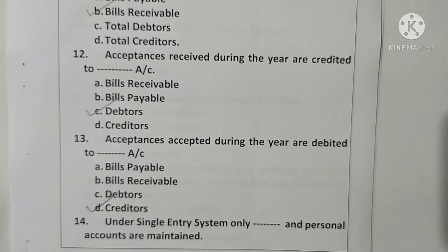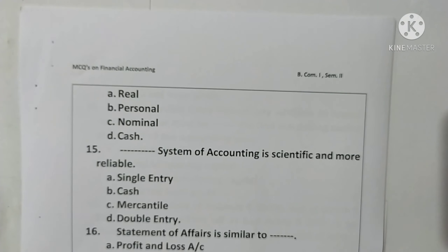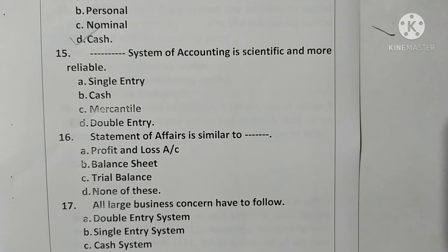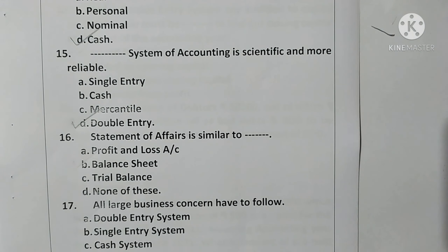Question 14: In single entry system, only cash accounts and personal accounts are maintained. Option D is correct. Question 15: Double entry system of accounting is scientific and more reliable. Option D is correct. Question 16: [statement continues in next segment].